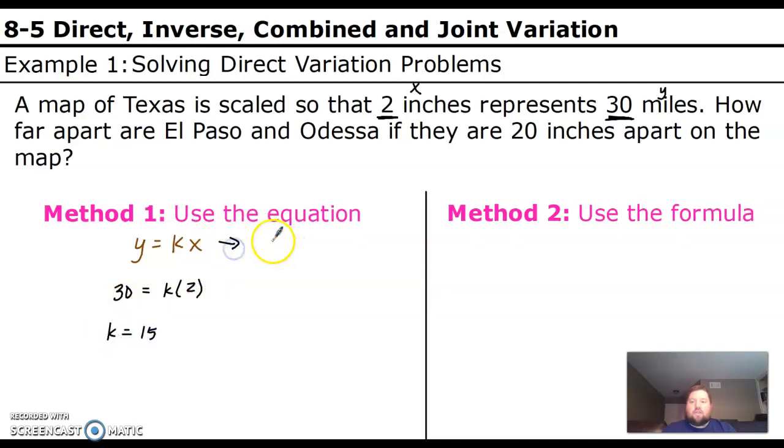So that gives me my equation, y equals 15x. And then you need to plug in the other piece that they gave you. So they gave us another piece here, 20 inches. Inches is x, remember. So we plug this in, y equals 15 times 20. And just multiply that out, and that's our answer. So 15 times 20 is 300 miles.